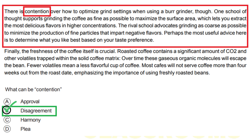Let's analyze the other options and explain why they are incorrect. Option A: Approval. This option is incorrect because contention refers to disagreement or conflicting viewpoints, not approval or agreement. Option C: Harmony. This option is incorrect because contention refers to the opposite of harmony. It signifies a state of disagreement or conflict, not harmony or agreement.